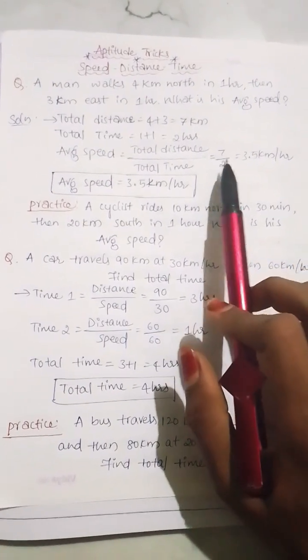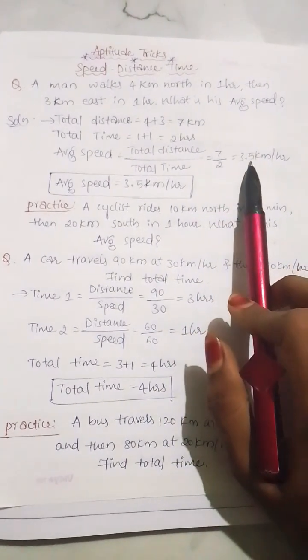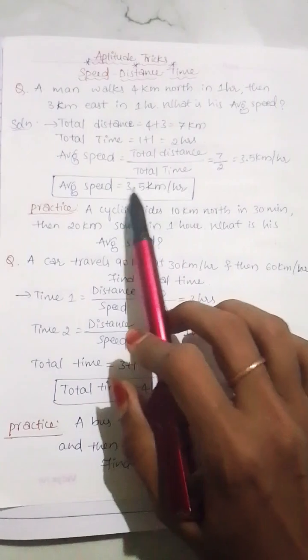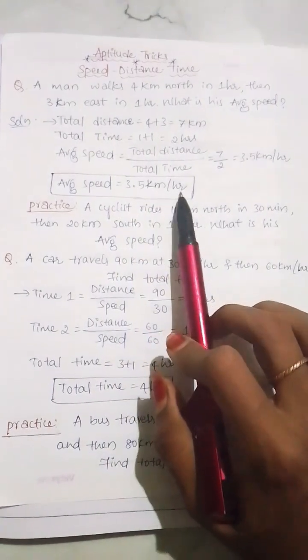Let us divide this. 7 divided by 2, we will get 3.5. The average speed is 3.5 km per hour.